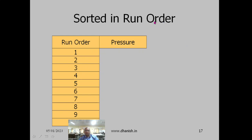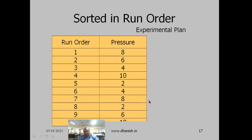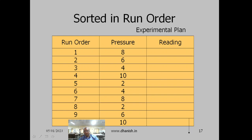Sort the table in terms of run order. Run order 1 corresponds to pressure 8, giving a sequence like: 1→8, 2→6, 3→4, 4→10, 5→2 for the first block, and 6→4, 7→8, 8→2, 9→6, 10→10 for the second block. Observations are filled on the right side. This table is called the experimental plan.